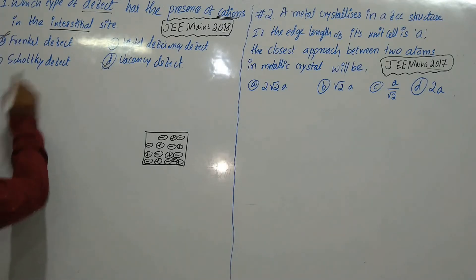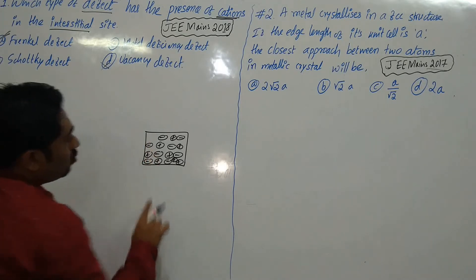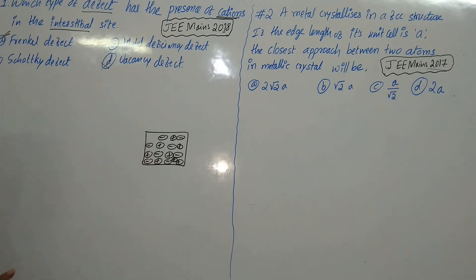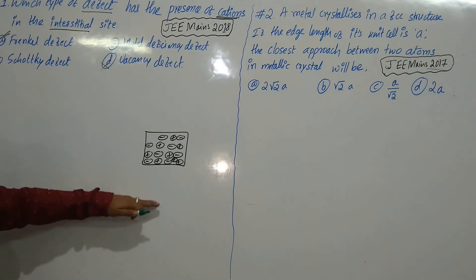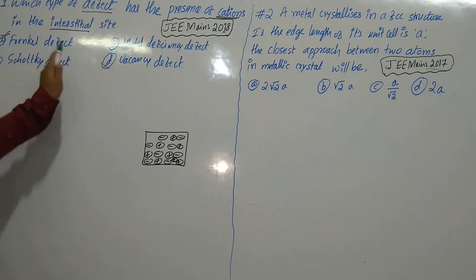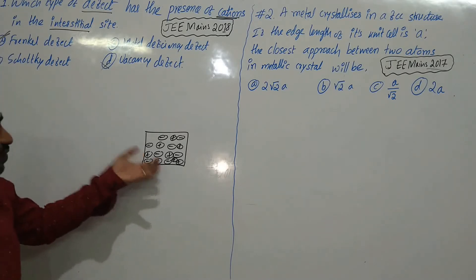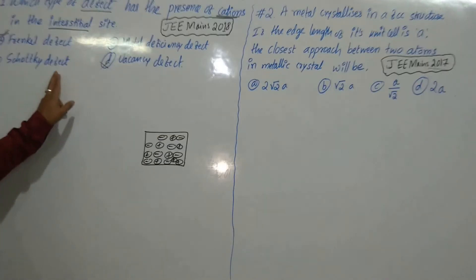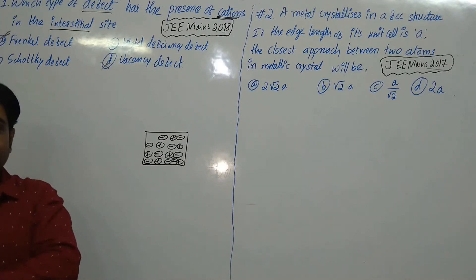So what is Schottky defect? In Schottky defect, equal numbers of cations and anions are removed from the crystal, so the density decreases. In Frenkel defect, density remains the same. If you want to know more about Frenkel and Schottky defects, please watch my previous video.